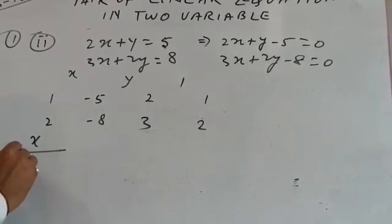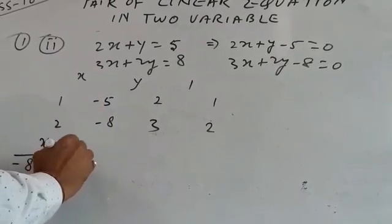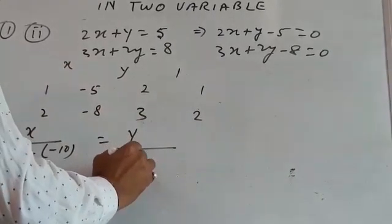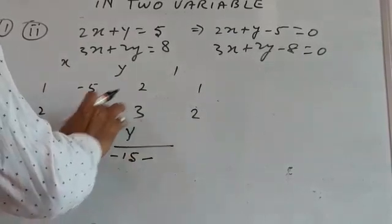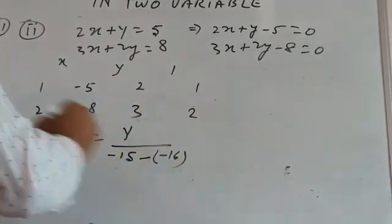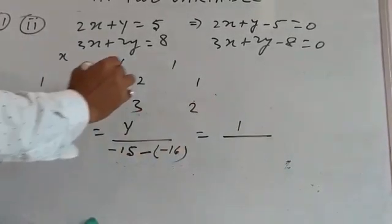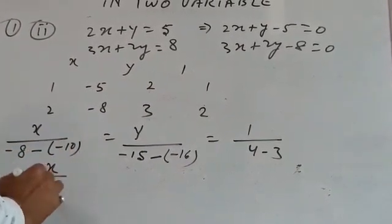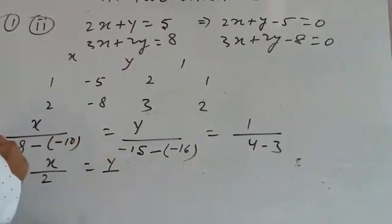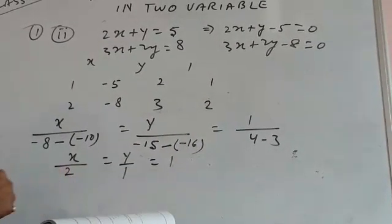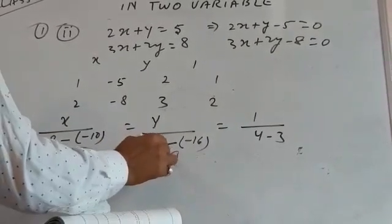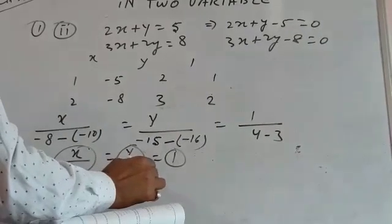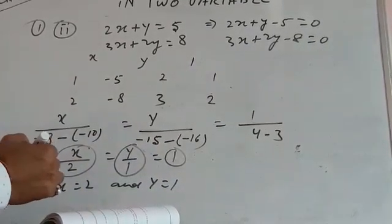Now apply the formula: x upon (1×(−8) − 2×(−5)) = x upon (−8 + 10) = x upon 2. This equals y upon ((−5)×3 − (−8)×2) = y upon (−15 + 16) = y upon 1. And equals 1 upon (2×2 − 3×1) = 1 upon (4 − 3) = 1 upon 1. So x = 2 and y = 1. That's how you use the cross multiplication method.